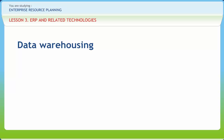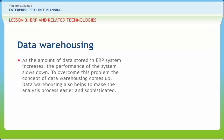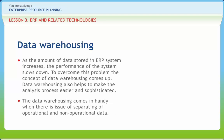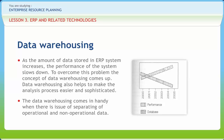Today's competitive business environment needs automated systems to improve performance and quick response time. As the amount of data stored in an ERP system increases, the performance of the system slows down. To overcome this problem, the concept of data warehousing comes up. Data warehousing helps make the analysis process easier and more sophisticated. It is particularly useful when there is an issue of separating operational and non-operational data. The non-operational data is transformed and cleaned so it can be retrieved and analyzed easily. Data warehousing systems use analytical tools such as ad-hoc query processing and OLAP.